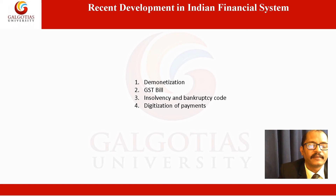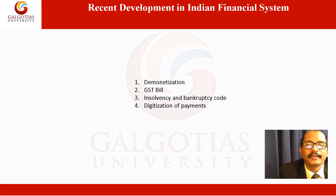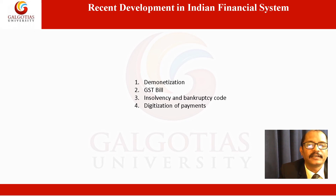The third important development was the Insolvency and Bankruptcy Code, passed in May 2016 by both houses of Parliament. The new law, which does away with at least 12 different rules — some of which are centuries old — is expected to usher in an effective bankruptcy resolution system that improves the ease of doing business in India. The central government in December notified final regulations related to the insolvency resolution process under the Insolvency and Bankruptcy Code of 2016, paving the way for the authorization of a 10-member Insolvency and Bankruptcy Board.